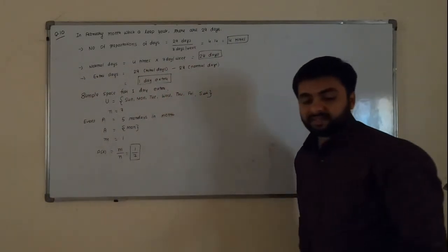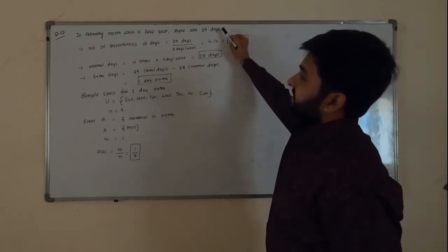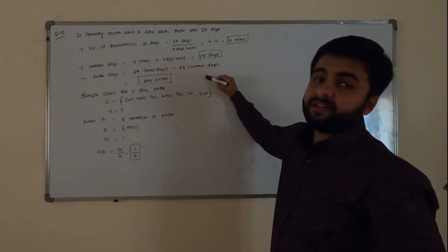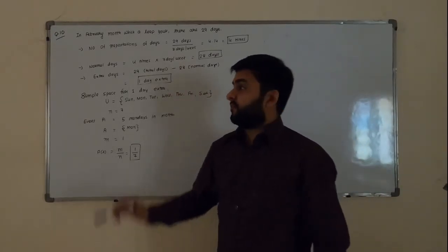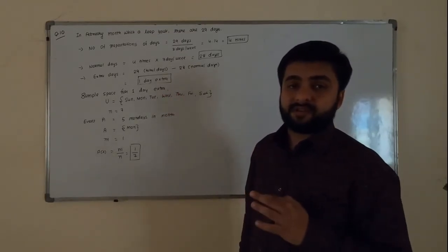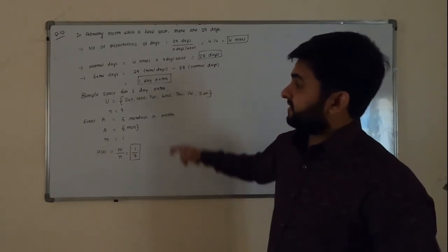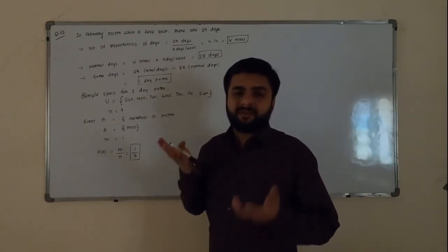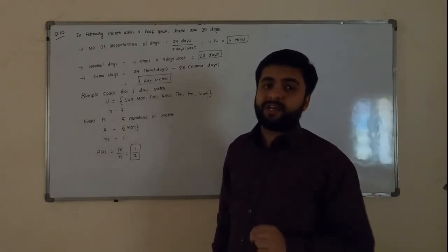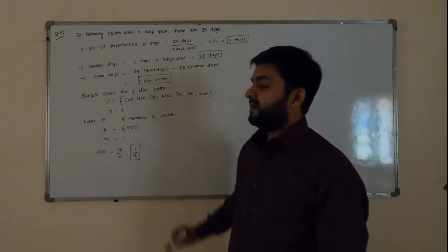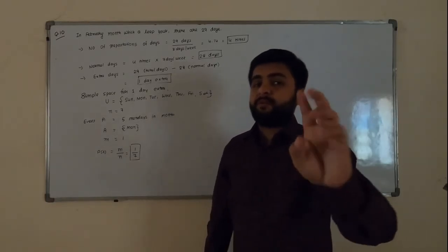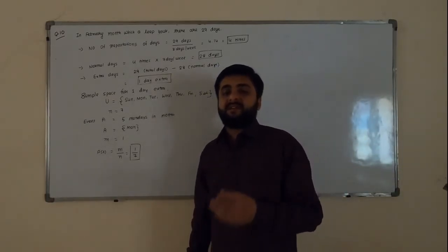If there is one extra day, probability = 1/7. If there are two extra days, write two consecutive pairs like Sunday-Monday, Monday-Tuesday, etc., and N = 7, so probability = 2/7. If there are three extra days, probability = 3/7. In short: the number of extra days directly gives you the numerator, and N is always 7 because there are always 7 days in a week.